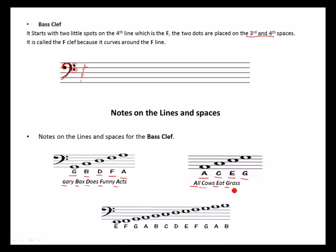When lines and spaces are combined for the bass clef: E on the line, F space, G line, A space, B line, C space, D line, E space, F line, G space, A line, and lastly B space.